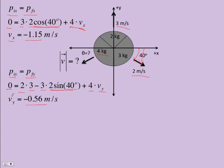We need to get the magnitude and direction. The magnitude is just the square root of the sum of the squares, and we get it's going 1.3 meters per second. Then to get the direction, inverse tangent of the y over the x.